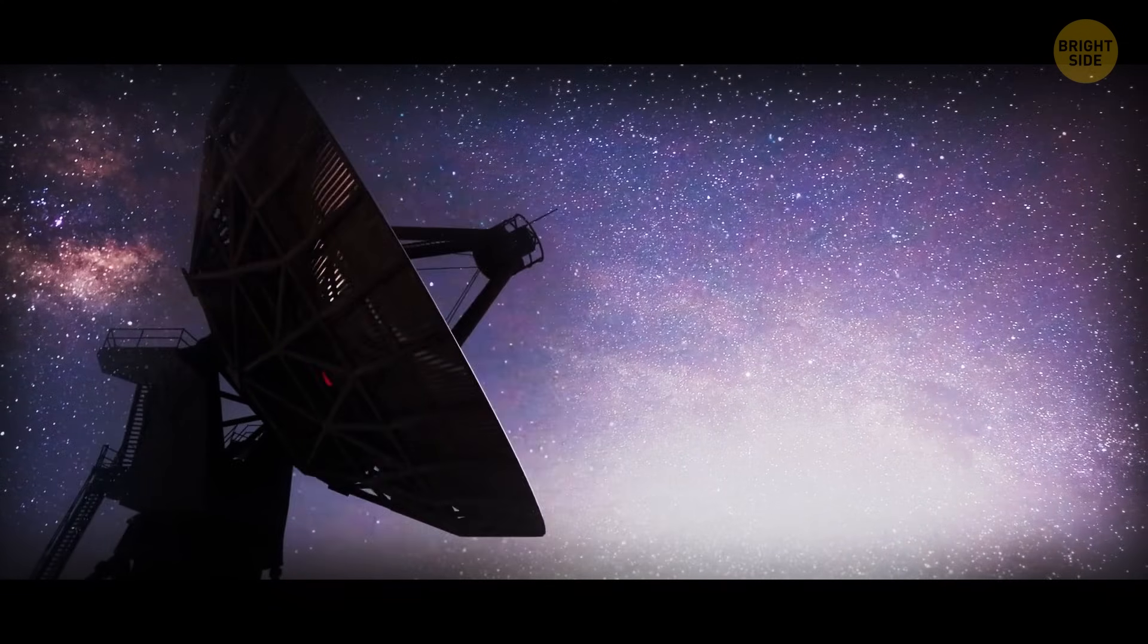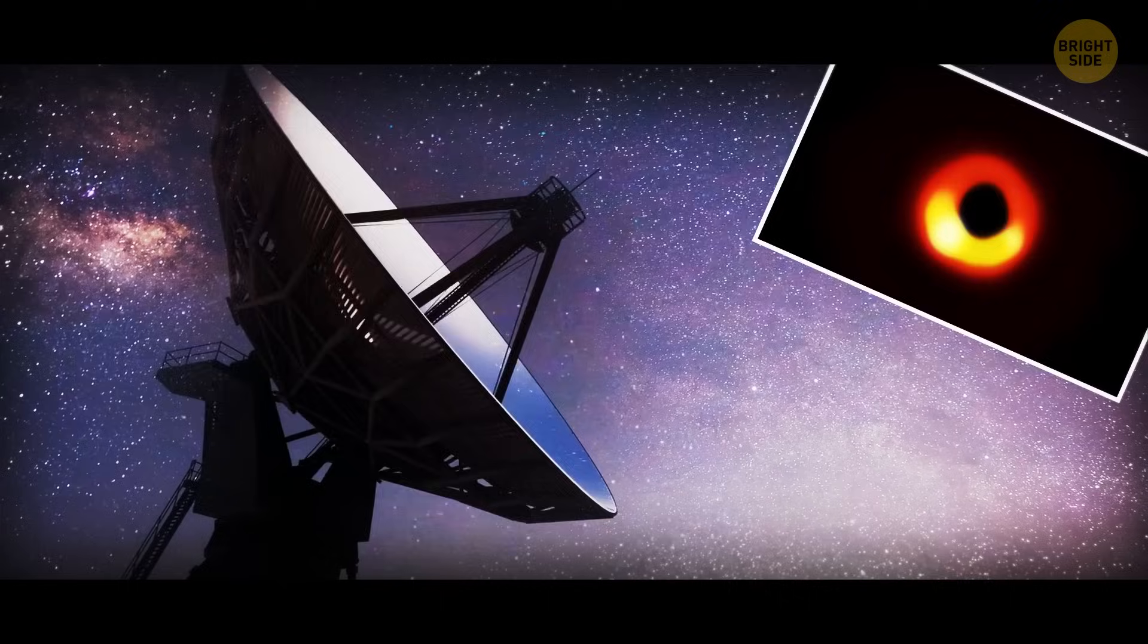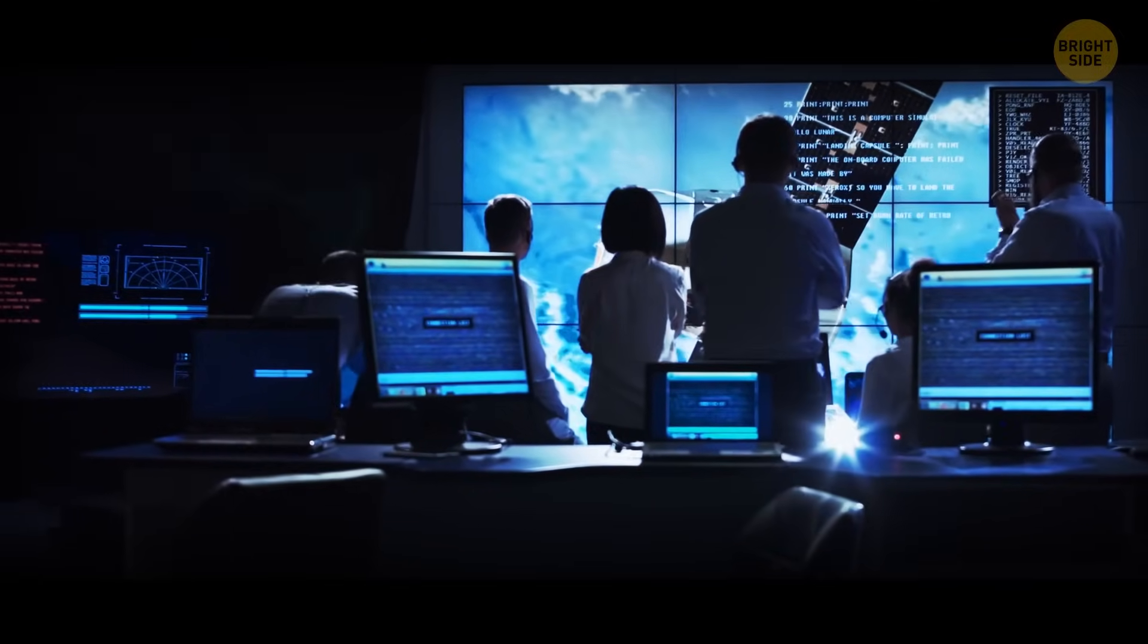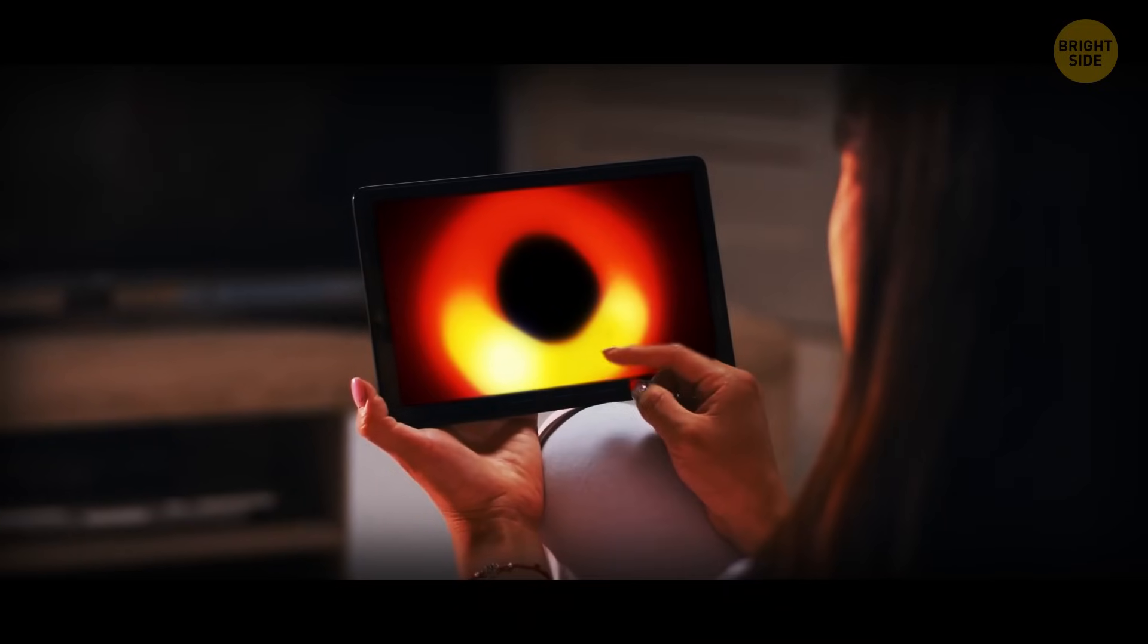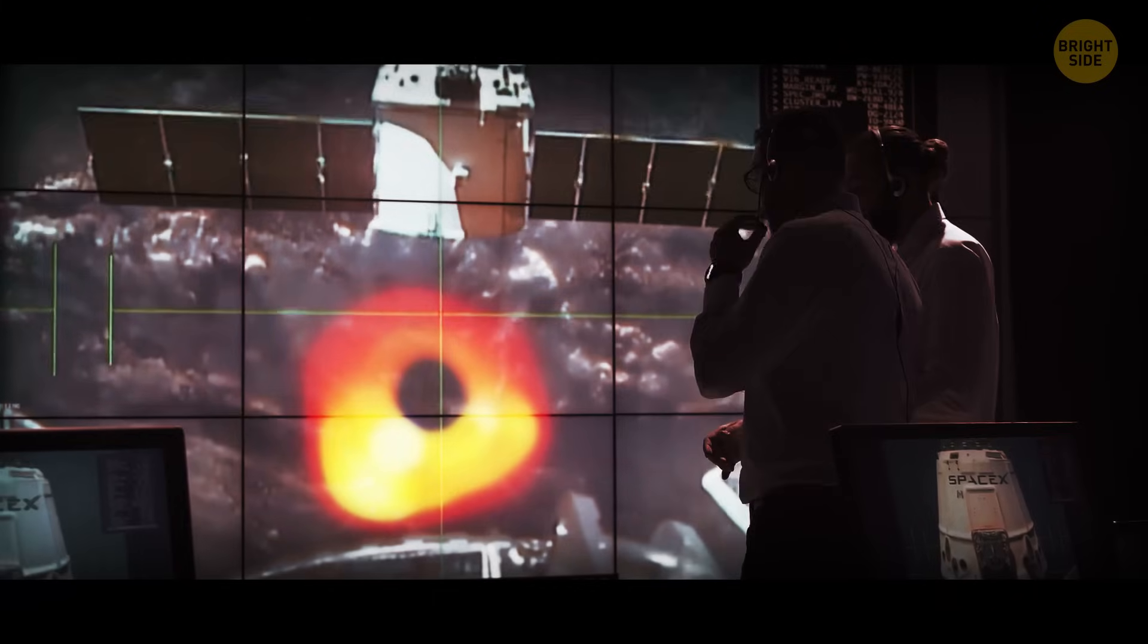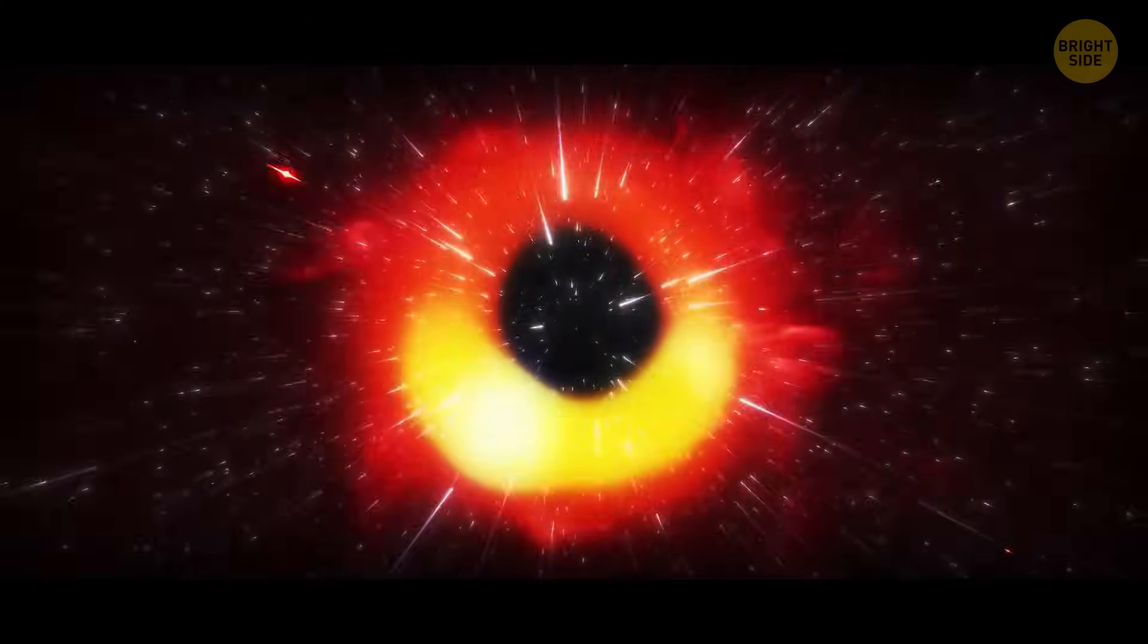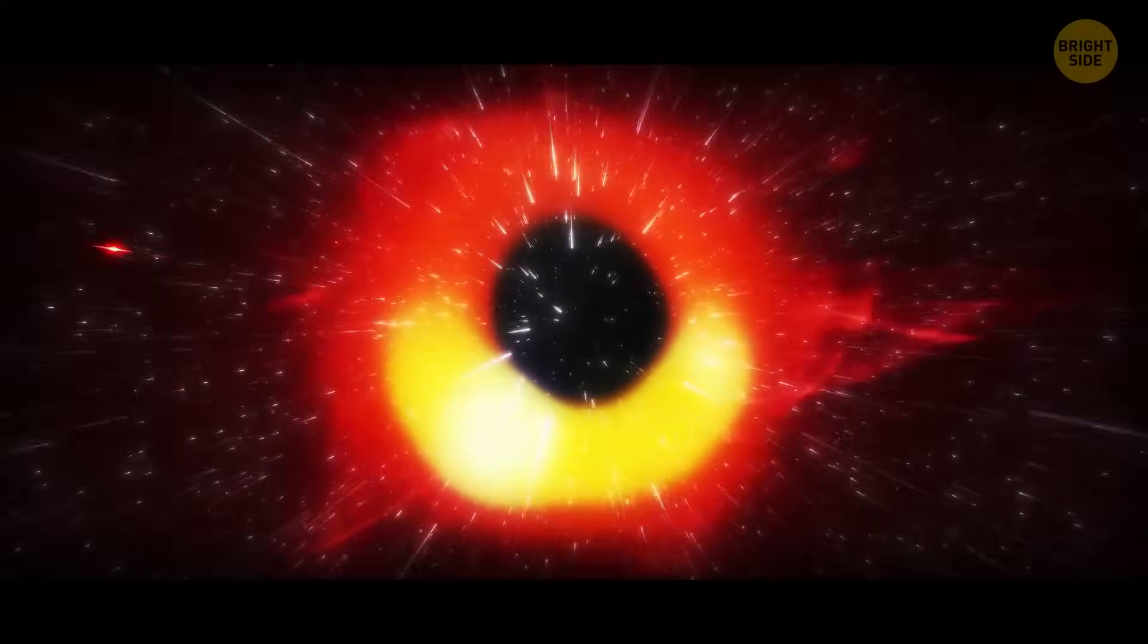In 2022, the Event Horizon Telescope collaboration released the first-ever image of Sagittarius A-star. It took years of collaboration and technology to capture this stunning image. And this is our second photo of a black hole in history. The first one was released in 2019, and it showed the supermassive black hole called M87-star. Yes, they both have star in their names. Don't try to make it make sense.